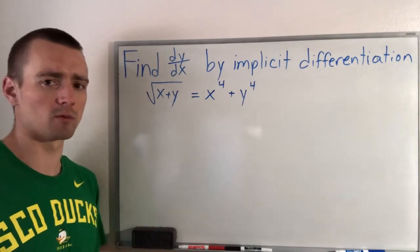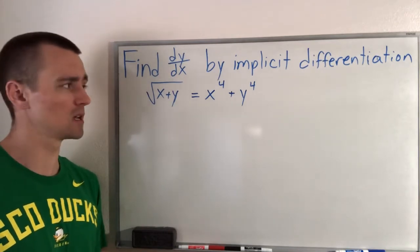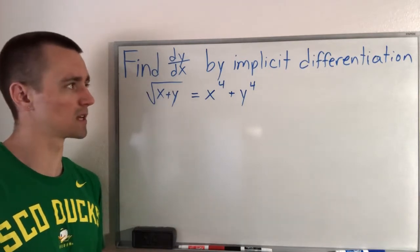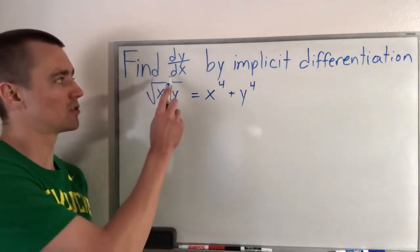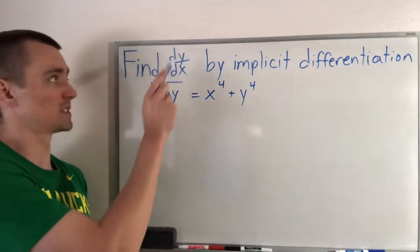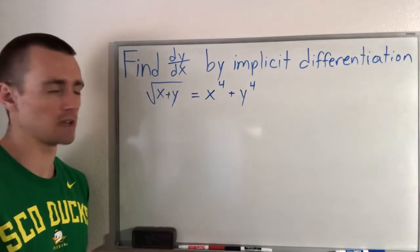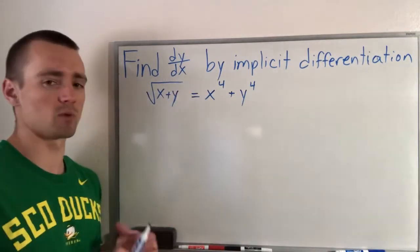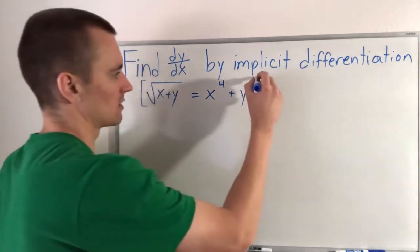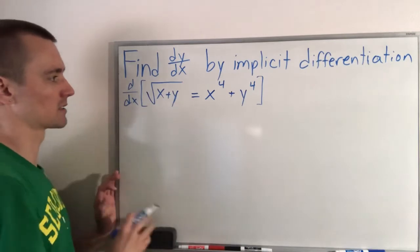But let's go ahead and jump into this problem. We're going to follow the same kind of process that we have been with all the other implicit differentiation problems. The first part is to take the derivative of both sides with respect to x. We know that we're taking the derivative with respect to x because we have dx in the bottom of this fraction. If it said find dx/dy instead of dy/dx, then we would take the derivative with respect to y. So whatever is in your bottom here is what you want to take the derivative with respect to.